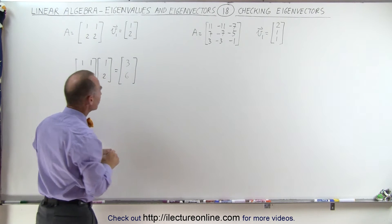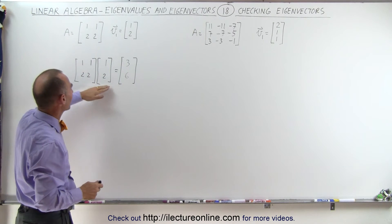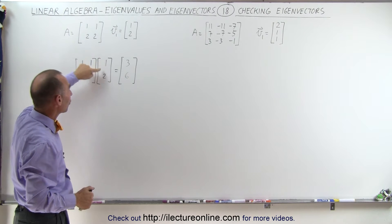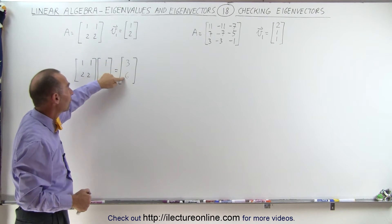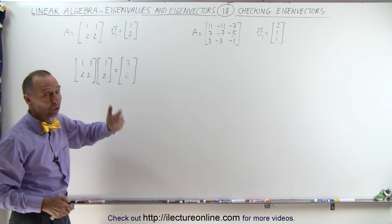Well wait a minute, you didn't get back your original eigenvector, but notice the ratio of the x to the y value in the eigenvector was 1 to 2, and that ratio is still there. It's 3 to 6 is the same as 1 to 2.